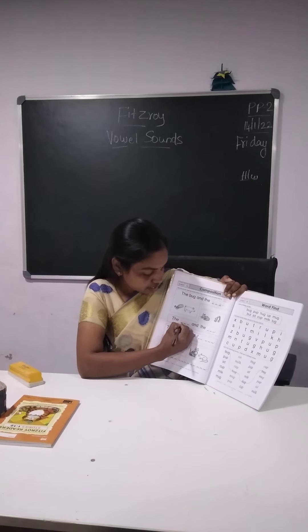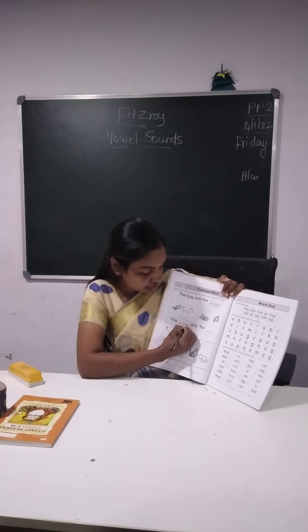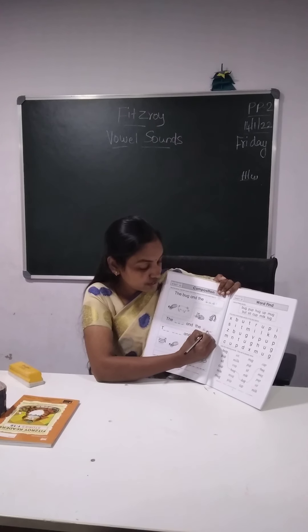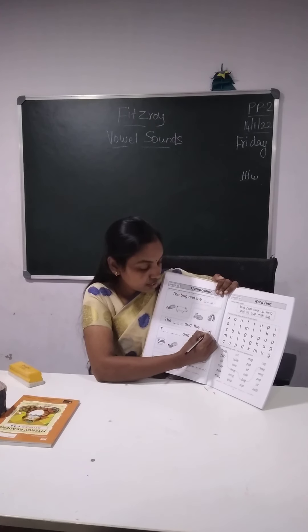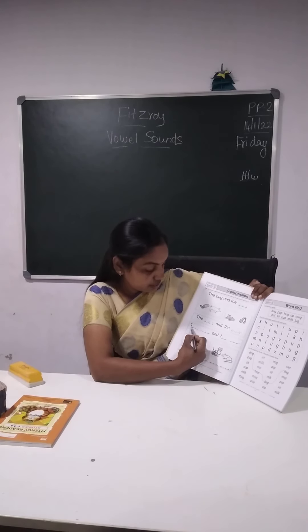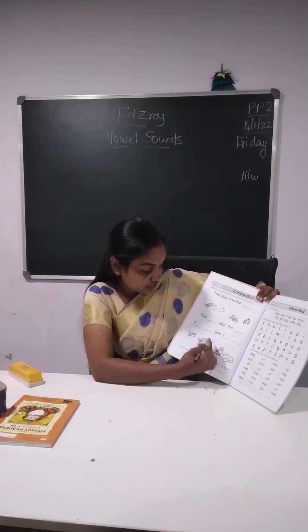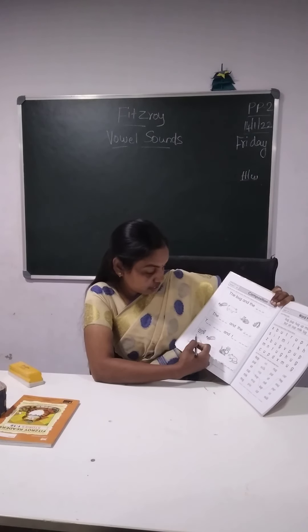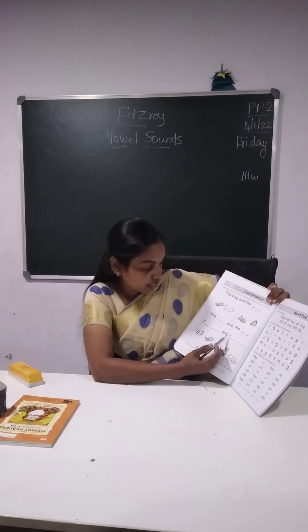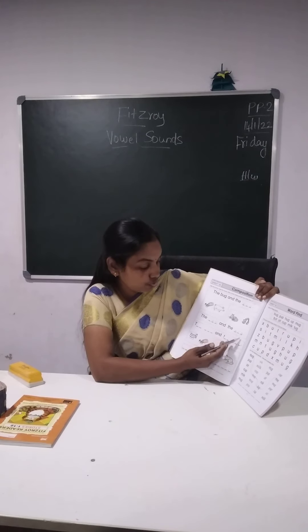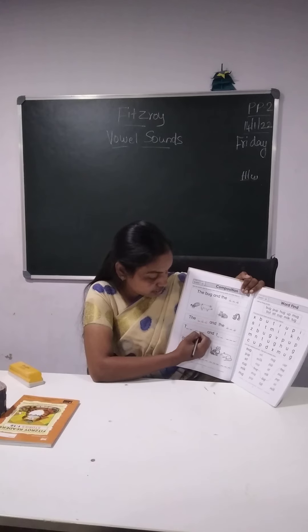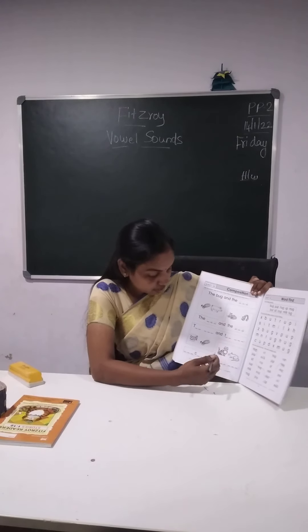The cat: C-A-T. And the wig: W-I-G. The blank and the blank — the cat and the wig. So you should fill this: T-H-E, the cat: C-A-T, and the wig. Same way: the cup and the cat.